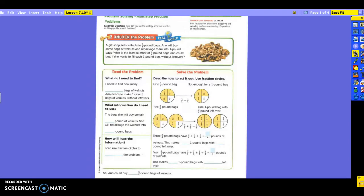So let's read the first one in front of us. A gift shop sells walnuts in three-fourths pound bags, and Will buy some bags of walnuts and repackage them into one-pound bags. What is the least number of three-fourths pound bags Ann will buy if she wants to fill each one-pound bag without leftovers?